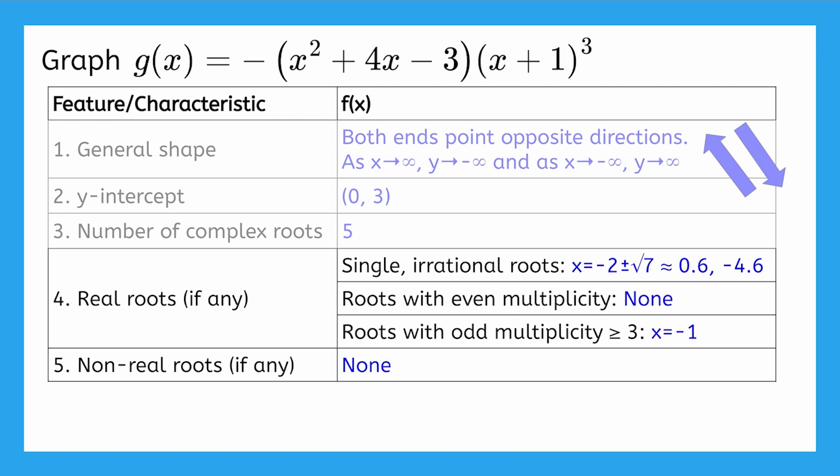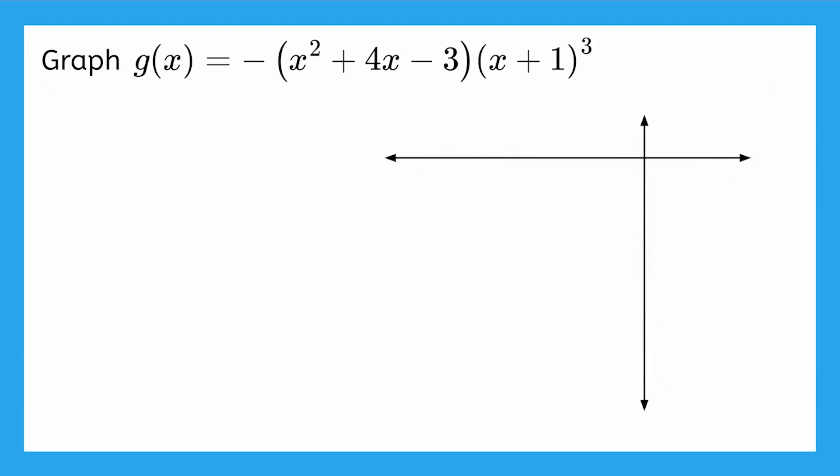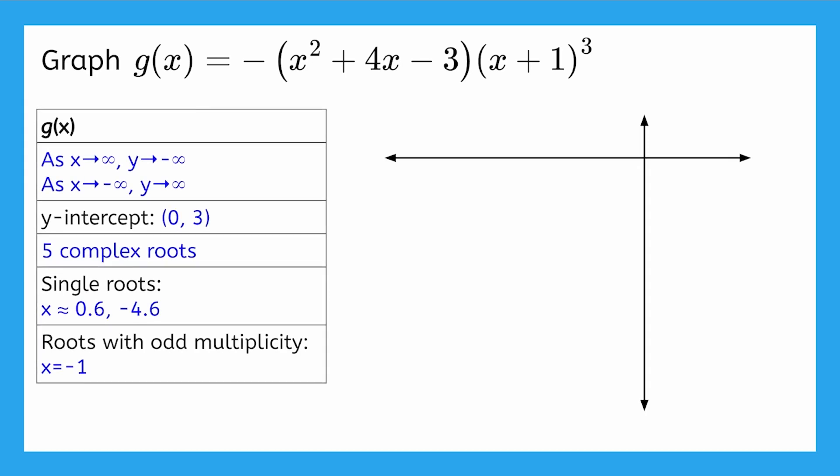Okay, now that we've gleaned as much information as we can from the factored form of this function, it is once again time to graph. Here are the key sections from the table that we'll need. Starting with line 1, let's add some arrows to remind us of the general shape of the function. Step 2 is to plot the y-intercept at 0, 3.